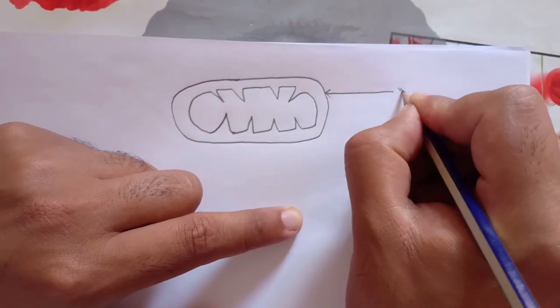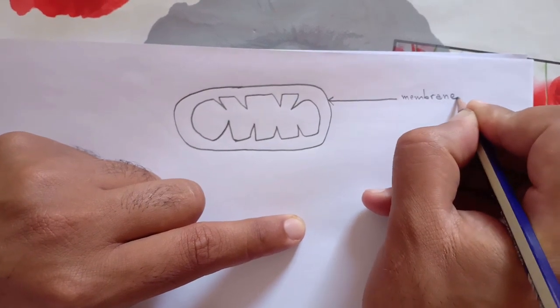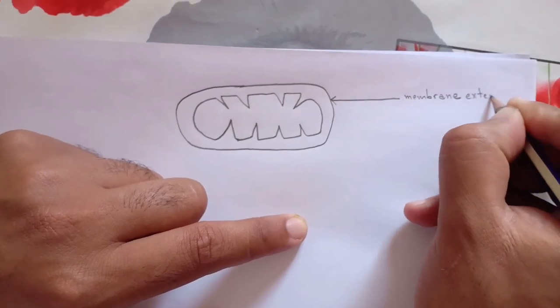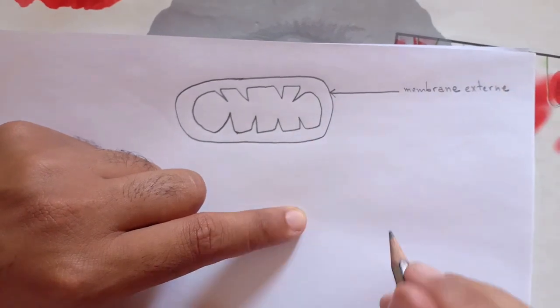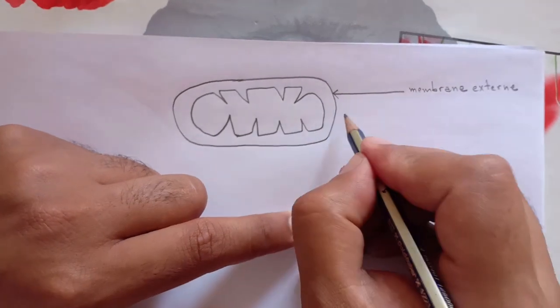Donc j'ai écrit ici, membrane externe. Voilà. Ça, ça s'appelle espace intermembranaire. Donc je mets une flèche ici.